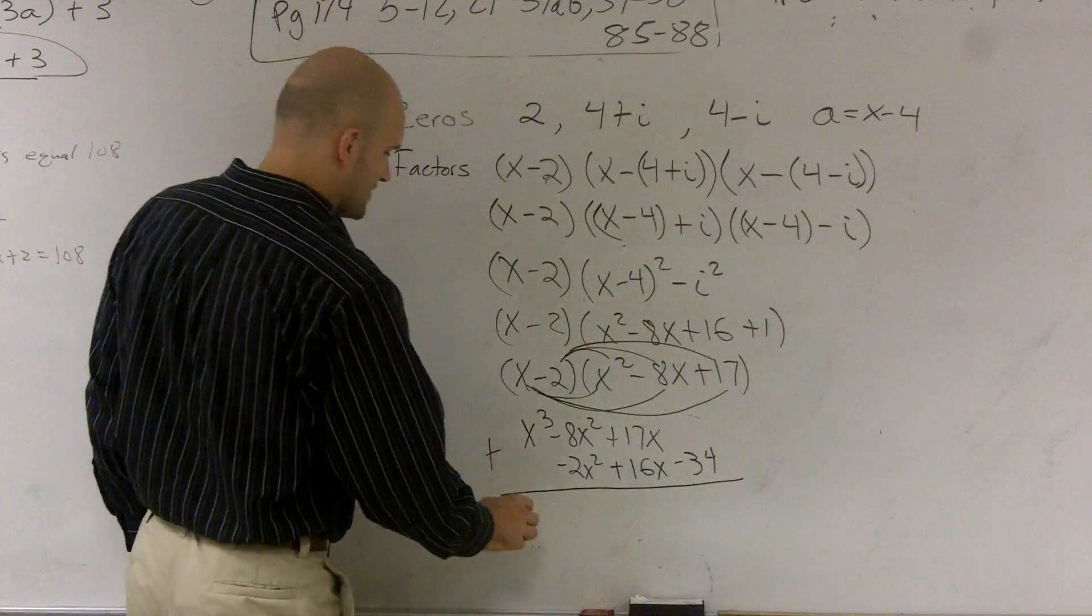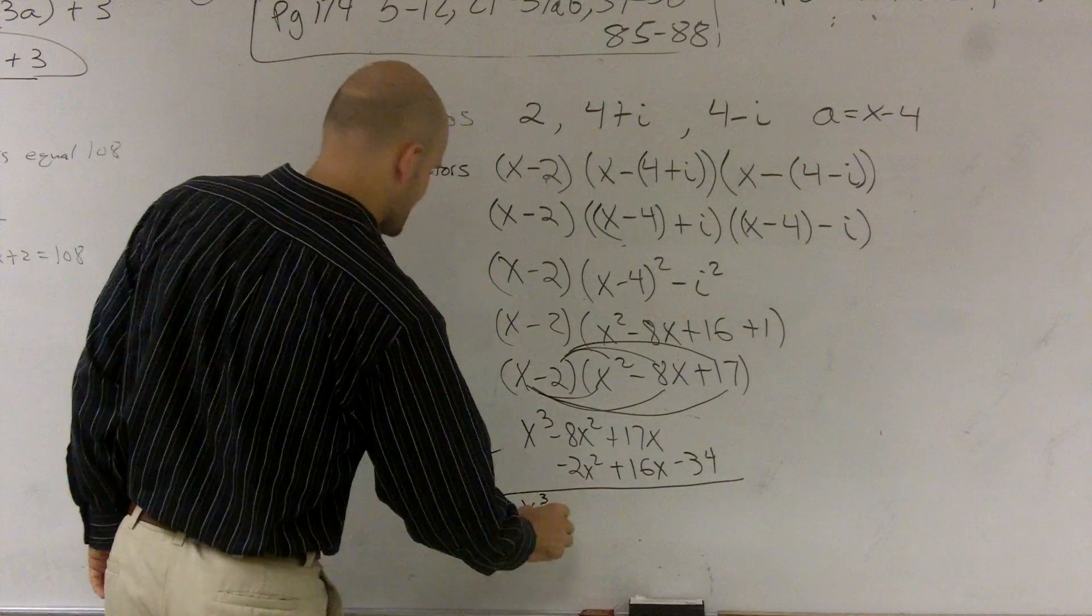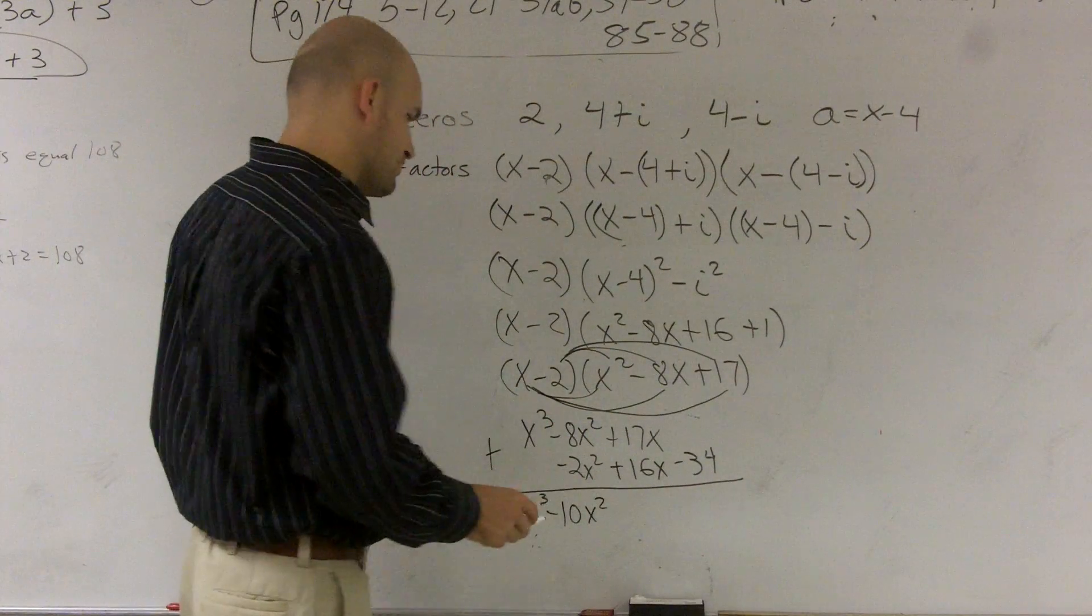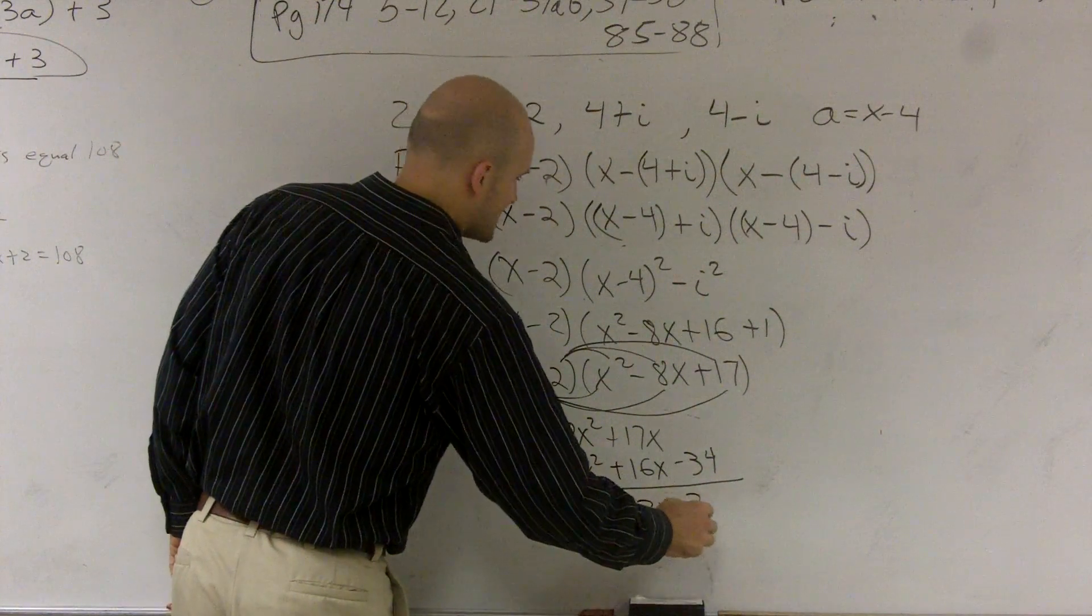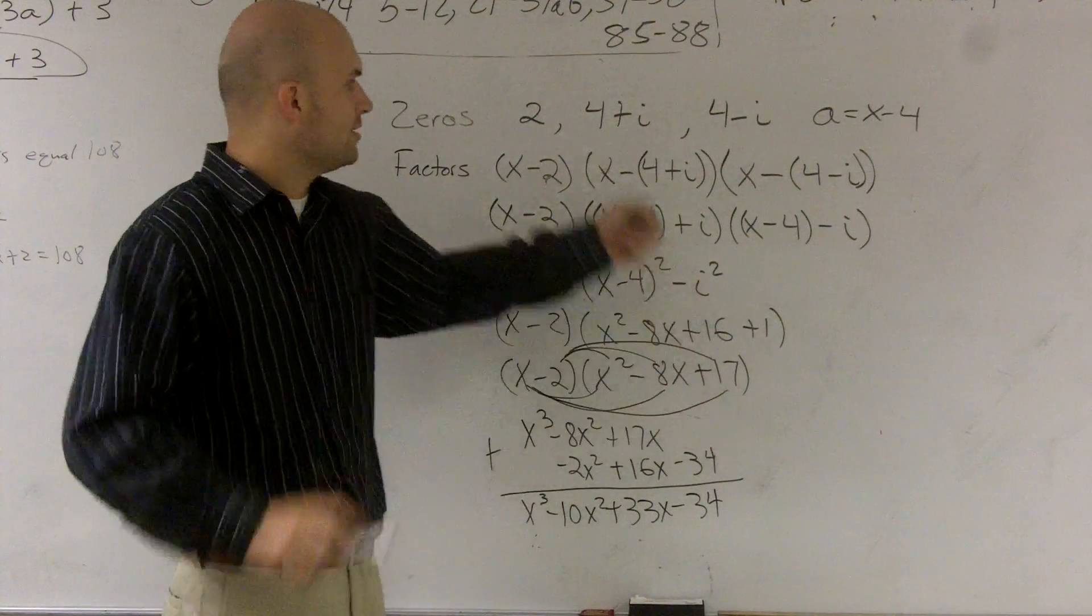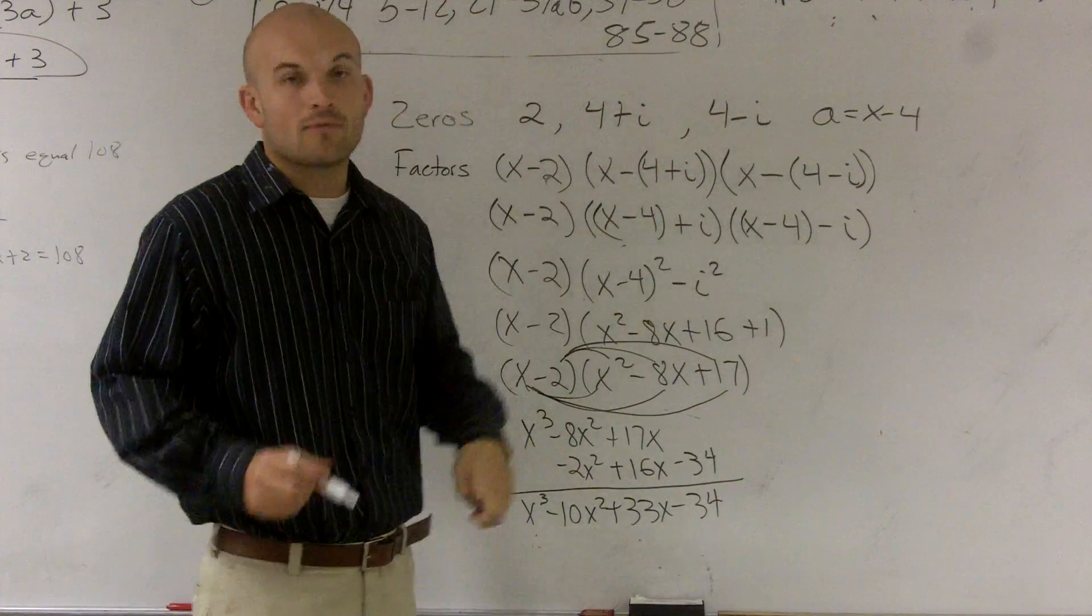I can just combine these now to give me x³, -10x², +33x-34. So that would be my third degree polynomial given the zeros of 2, 4+i, and 4-i.